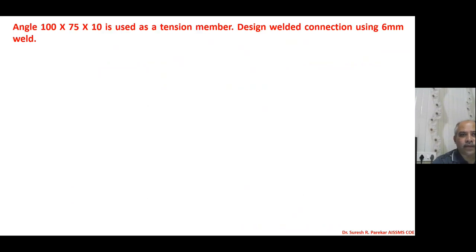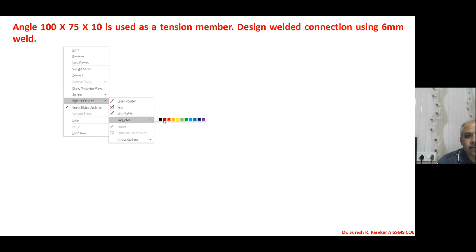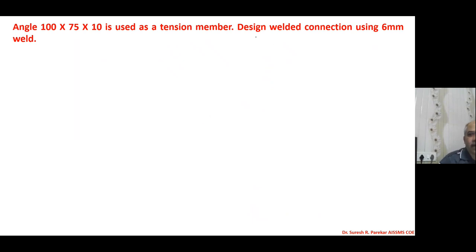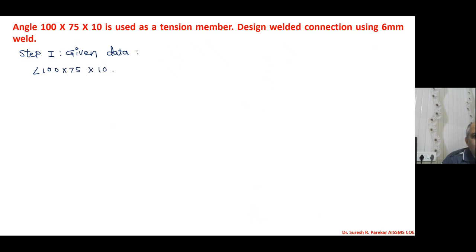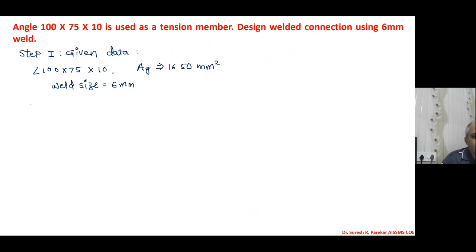Good evening, this is lecture number four. We have considered the same problem — angle 175×10 — which we are going to use as a tension member. We are interested to design the welded connection, and the weld size is given as six millimeters. Step one: given data — angle 175×10, area = 1650 mm², weld size = 6 mm.